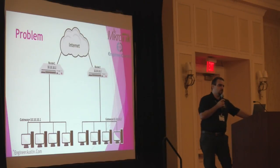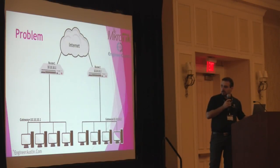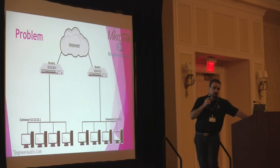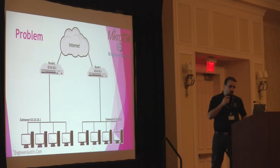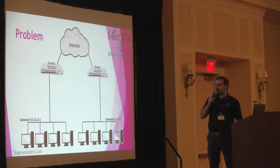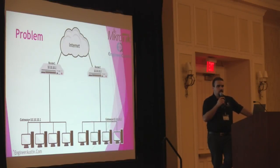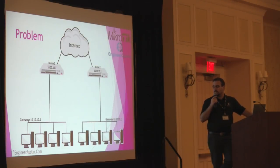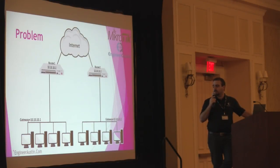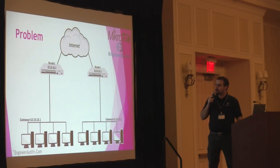We can provide multiple solutions. Maybe use half the clients connected to router one and the other half connected to router two, but we just created another problem — what happens to those clients connected to router one if router one fails? We would need to change the gateway on the hosts or change DHCP configuration. Wouldn't it be better if we had a failover plan for them? That's where the First Hop Redundancy Protocol comes into play.